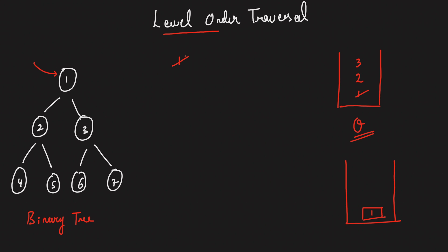Now in the next iteration of the queue, whatever is lined up in your queue, just take them. On 2, check the left — that's a 4. On 2, check the right — that's a 5. So first 4, then 5, insert that into your queue data structure. Similarly, do it for 3.